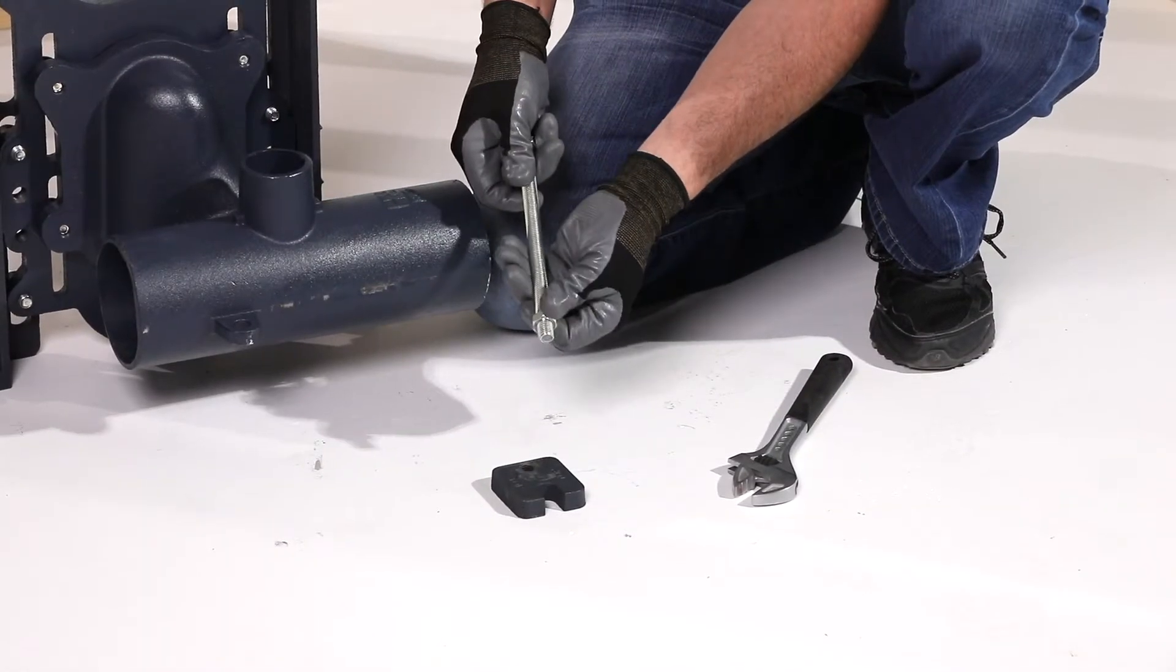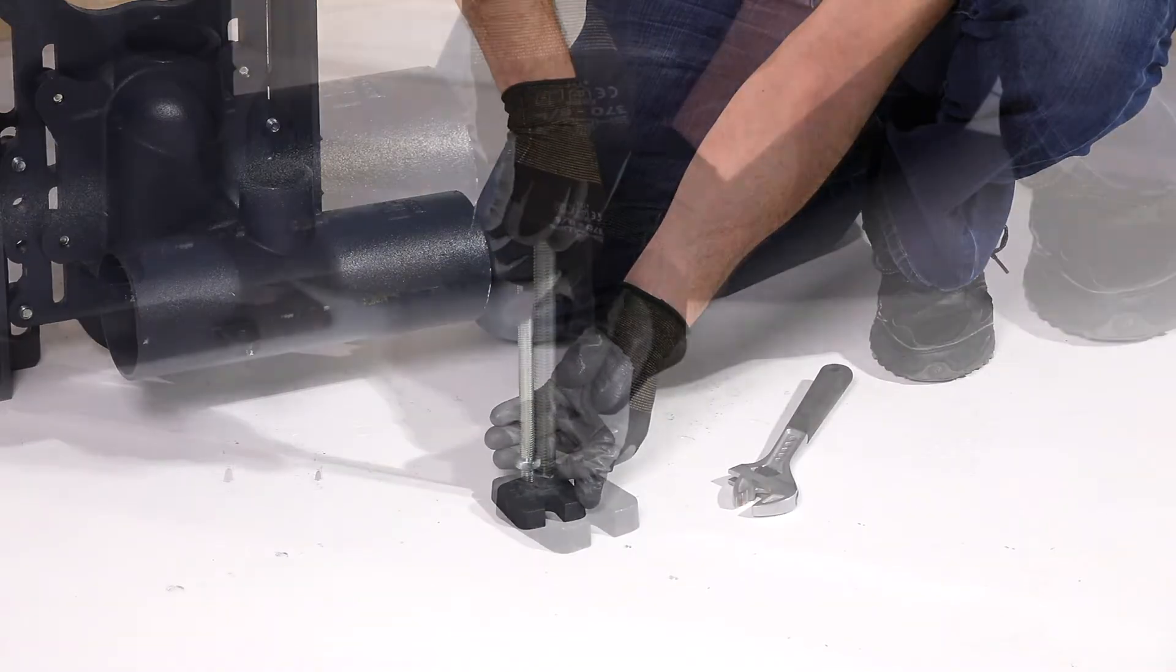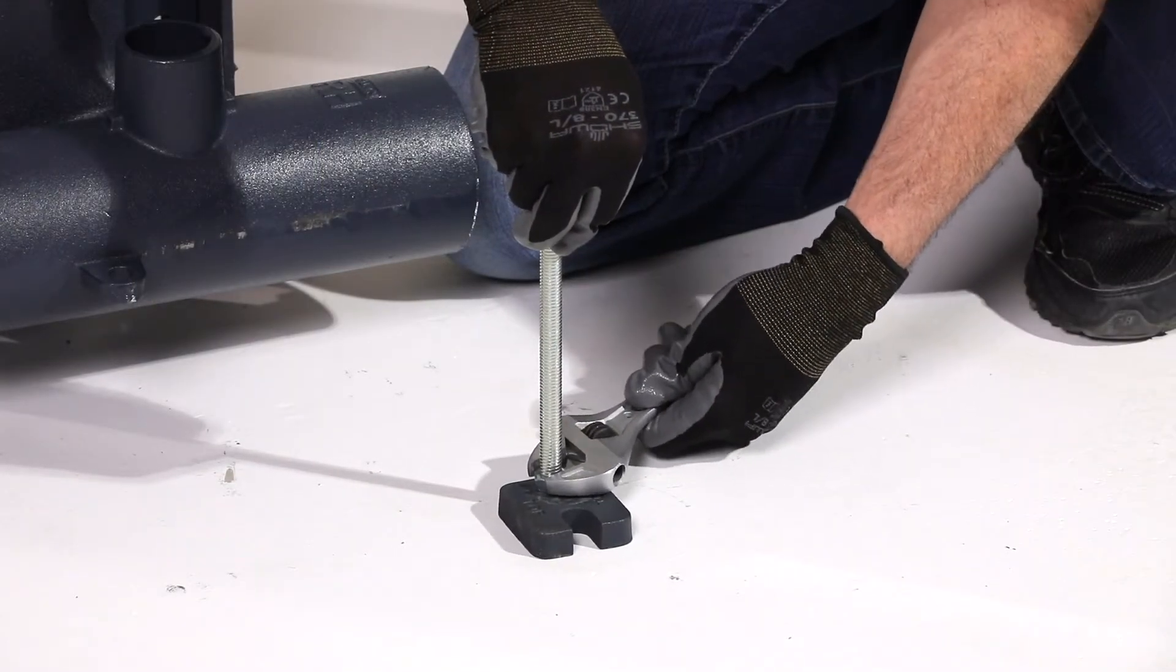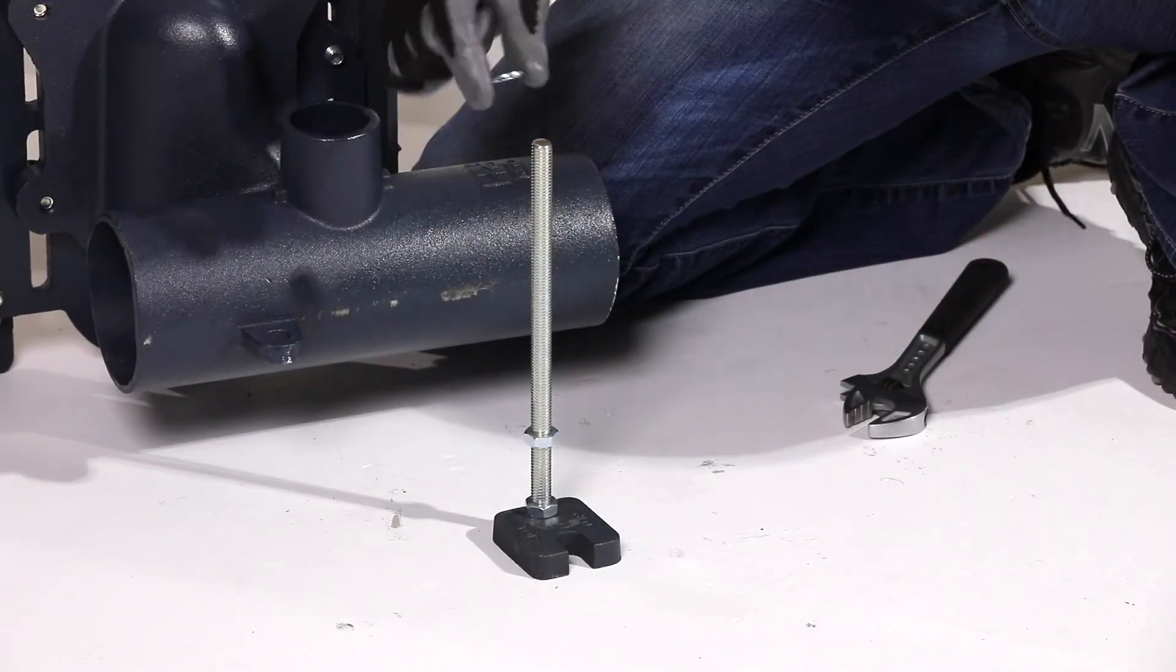Step three: assemble the anchor foot. Thread the rod into the top of the rear anchor foot, then secure with a half-inch jam nut. Next, place a nut, a lock washer, and a flat washer onto the threaded rod.